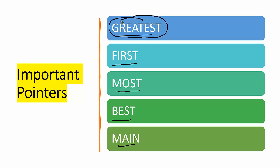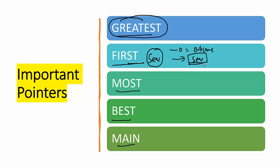When a question uses the word 'first,' it is talking about sequence. In such a question, one option talks about outcome and another about sequence — we need to select the option that talks about sequence. For example: what is the first step in risk management? Option A is 'identifying the risk' and option B is 'mitigating the risk.' Mitigating risk is an outcome, so we don't select it because the question is asking about the first step, not the primary objective.